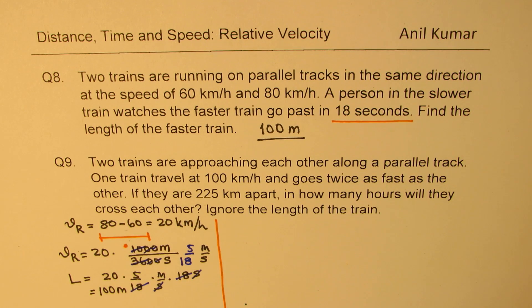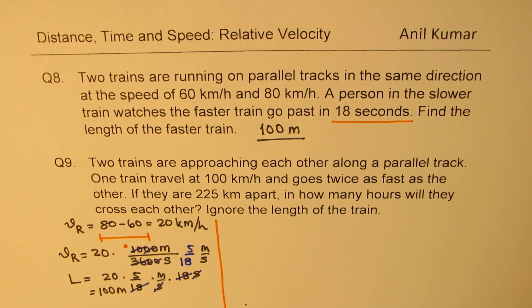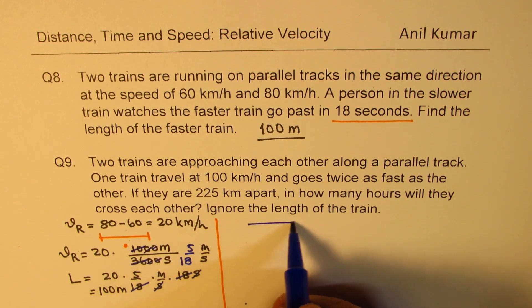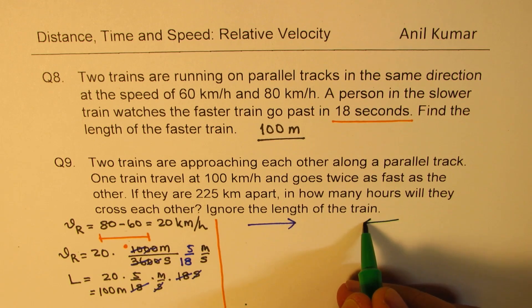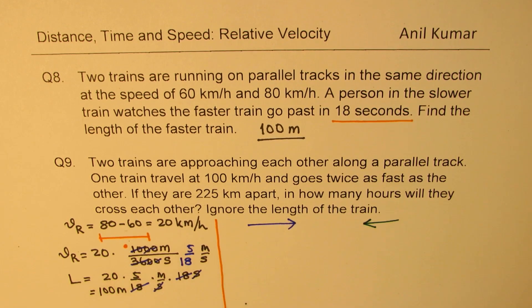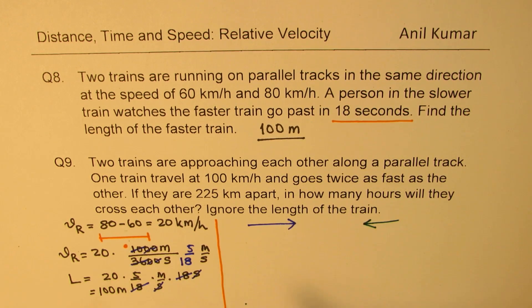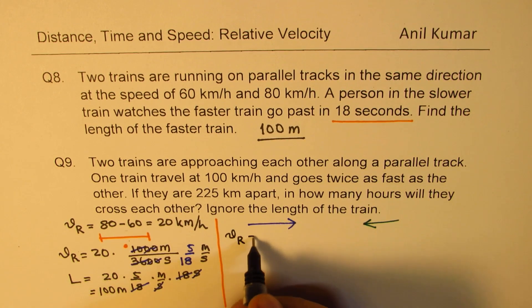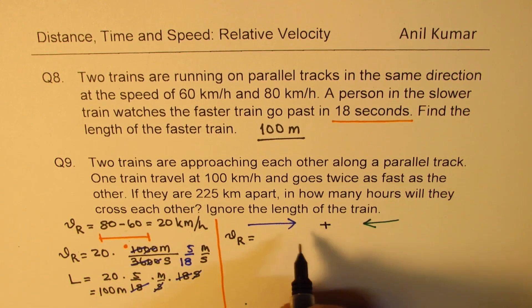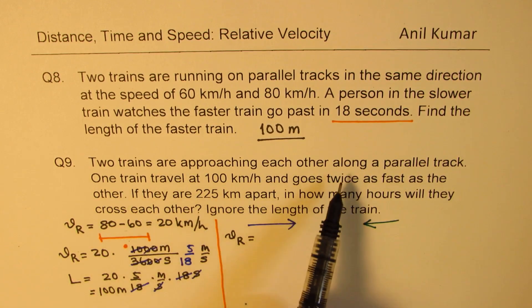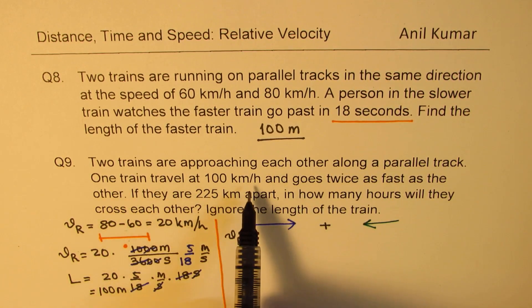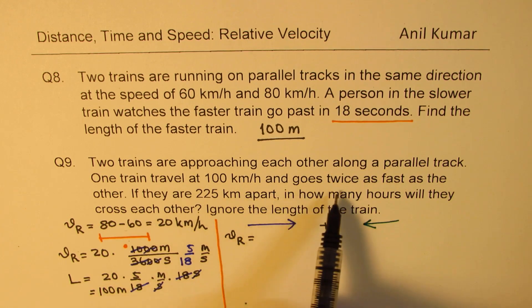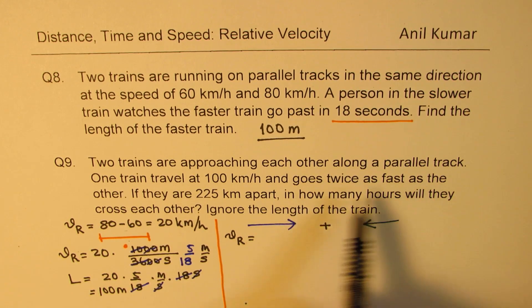Question number 9: two trains are approaching each other, so that means one train is going in this direction and the other train is coming in this direction. Approaching means relative velocity is much higher. Relative velocity adds up, so you have to add the velocity. Two trains are approaching each other along a parallel track. One train travels 100 kilometers per hour and goes twice as fast as the other.